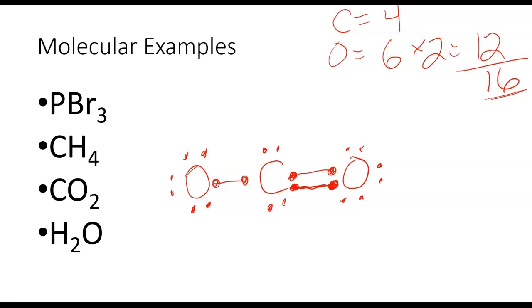Now we double check our octet, 1, 2, 3, 4, 5, 6, 7, 8, 9, 10, too many electrons on carbon. So I'm going to remove one of these lone pairs of electrons.